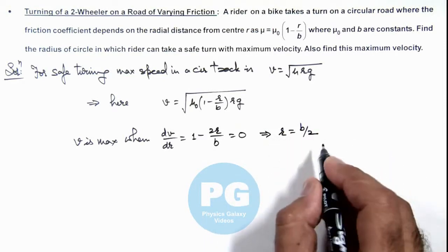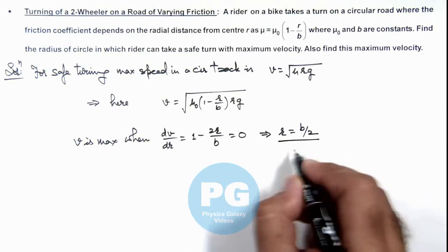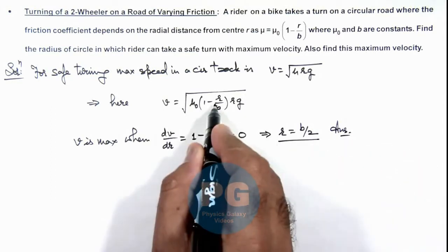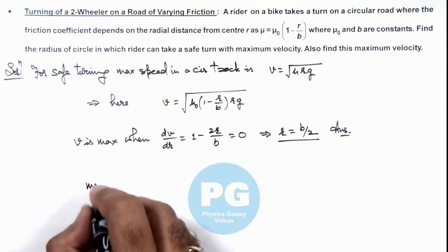So at this radius, the speed will be maximum. That is one result of the problem. We can substitute r here to find this maximum speed,